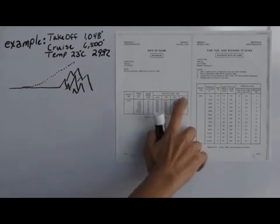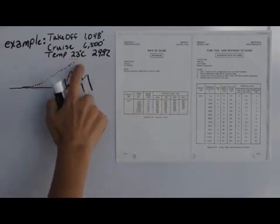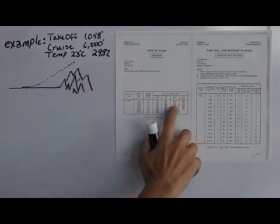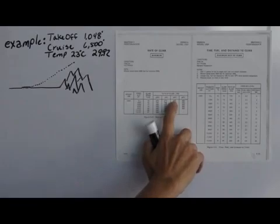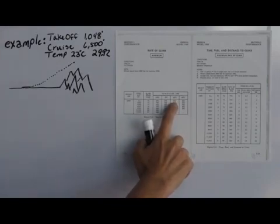Next you would have to look at the different temperatures. The temperature in our example is 23 degrees, which is pretty close to 20 degrees. So we would probably say that our rate of climb would end up being somewhere between 650 and 755, so somewhere close to 700.